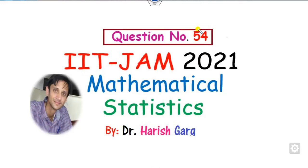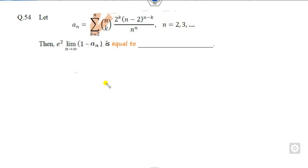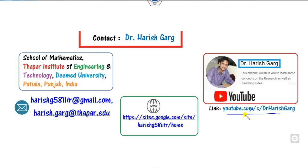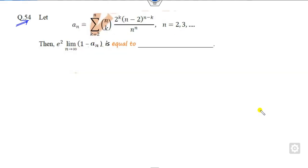Hello students, welcome to question number 54, which was asked in the IIT JAM 2021 Mathematical Statistics. This question involves limits and summations related to some distribution. If you want to find videos related to previous questions, you can simply follow the link provided.